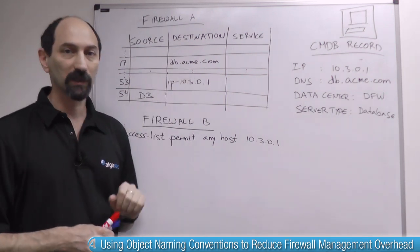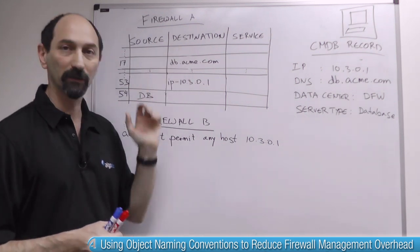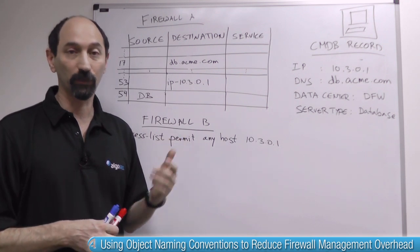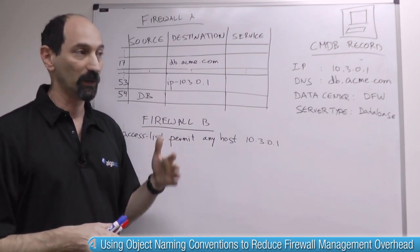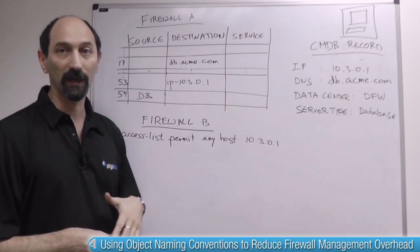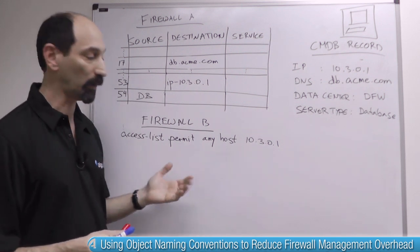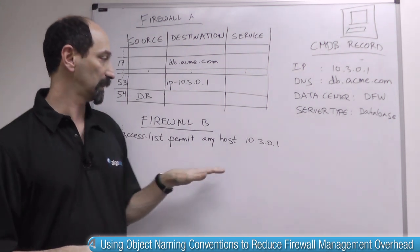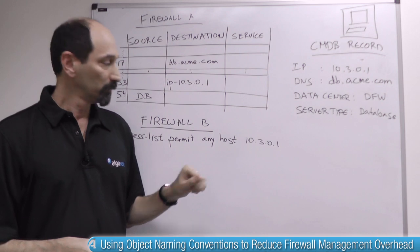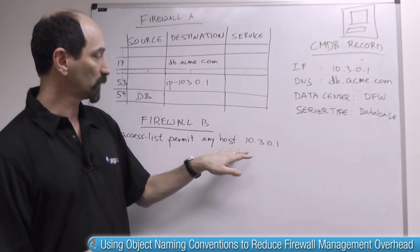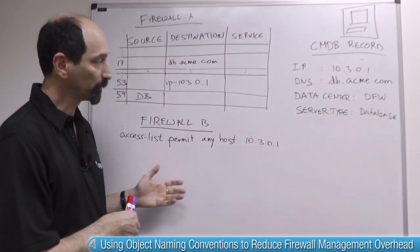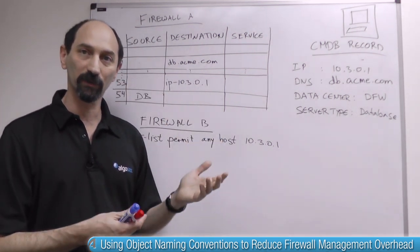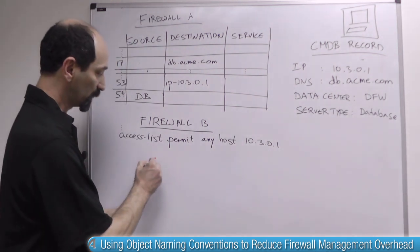Each engineer might have their own way of calling things and you could have many of these all referring to the same server. The problem gets worse if you have a diverse environment with firewalls made by different vendors, because each vendor has their own rules on how you can call things. On firewall B you might have to write access lists and refer to that server using some syntax like 'host' followed by the IP address. The result of all these different ways of calling the same server is management clutter.